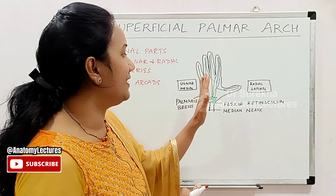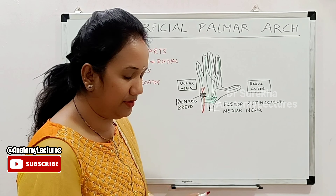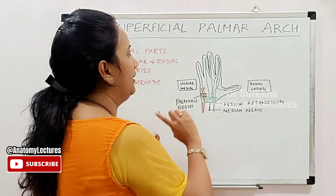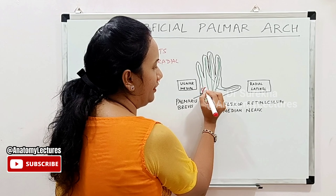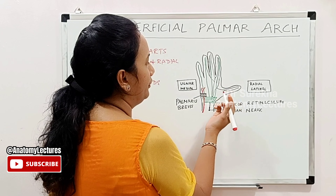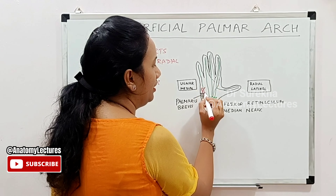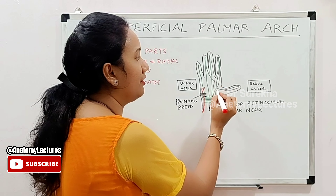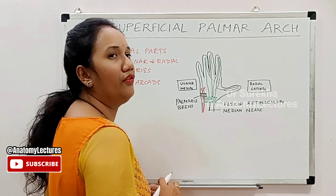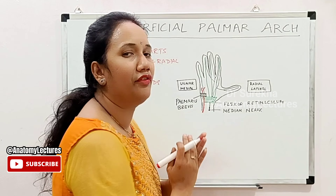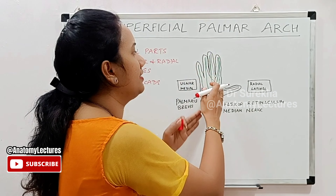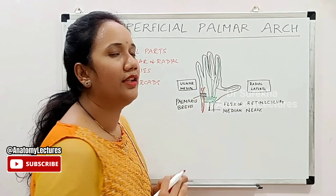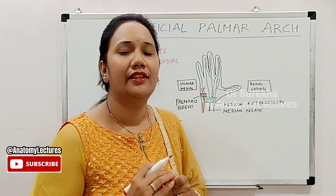The ulnar artery passes along the ulnar — or medial — aspect of the hand. Note that ulnar and medial mean the same, and radial and lateral mean the same. The ulnar artery passes along the medial aspect of the forearm and is accompanied by the ulnar nerve throughout its course in the forearm. On reaching the hand, it passes superficial to the flexor retinaculum, which is a modification of the deep fascia.